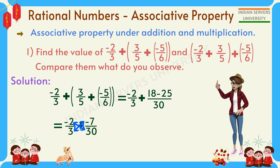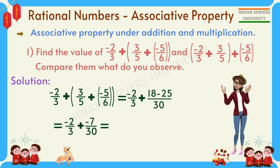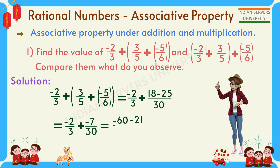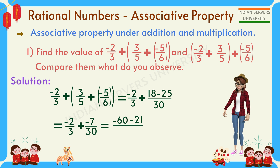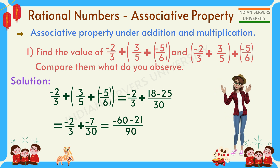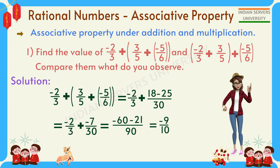Again, solving this: cross multiplication gives 30 × (-2) = -60, (-7) × 3 = -21, denominator 3 × 30 = 90. So we get -81/90, which equals -9/10.